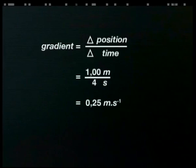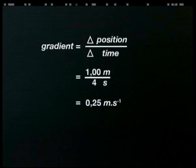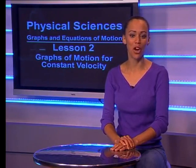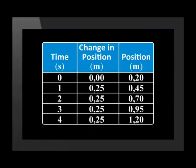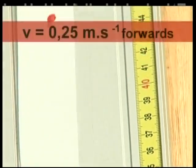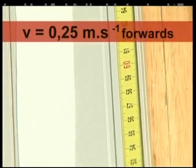Let's use the values for the whole time in our calculation. The trolley changed position from 0.2 meters to 1.2 meters. The change in position was 1 meter, and the change in time was 4 seconds. This gives an answer of 0.25 meters per second. Nelly has shown us how to use the gradient of a displacement versus time graph to calculate the magnitude of the constant velocity. The trolley changed position by 0.25 meters every second, so its velocity is 0.25 meters per second forwards for all time intervals. The gradient of a displacement versus time graph gives us the magnitude of the constant velocity.